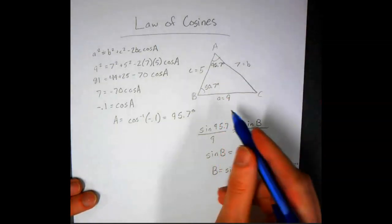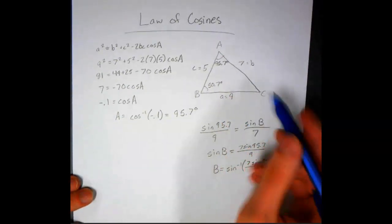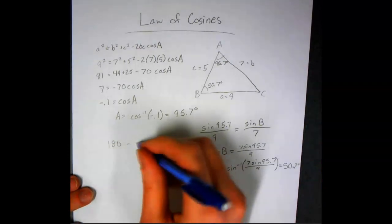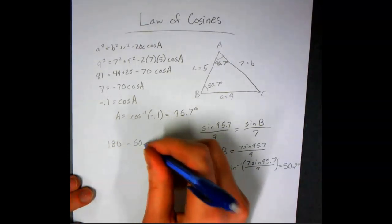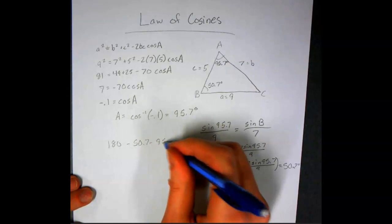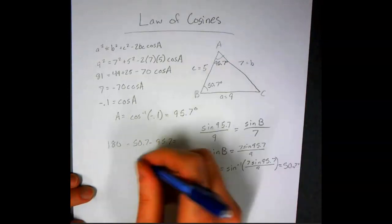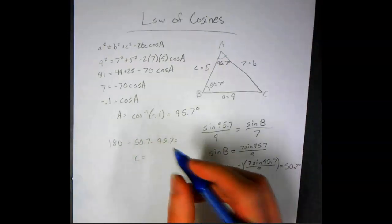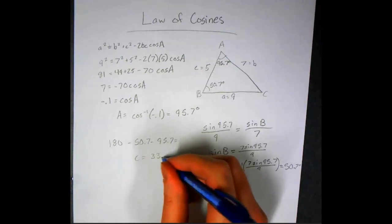Now we have two angles. We're trying to solve for that third angle, so we can use our property of a triangle. 180 minus the 50.7 minus the 95.7, and c is going to equal 33.6 degrees.